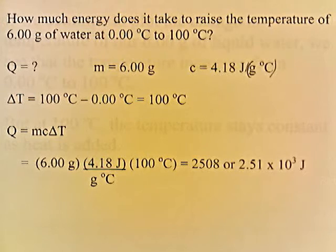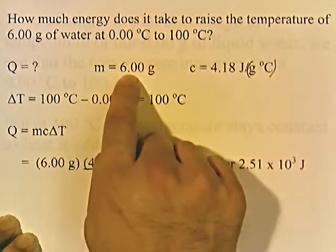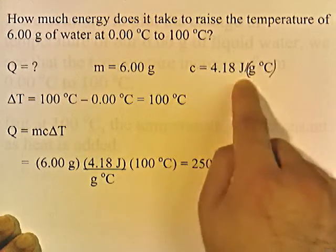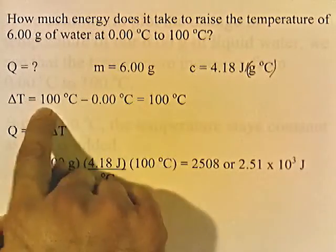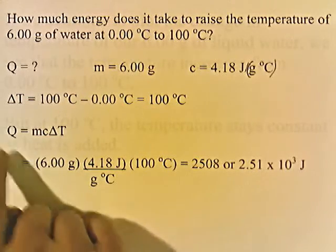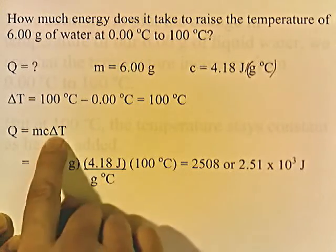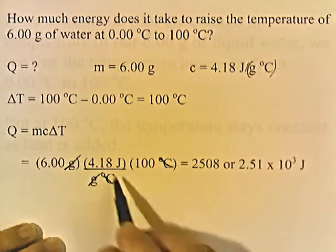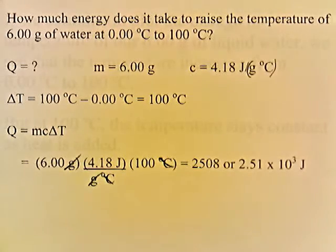How much energy does it take to raise the temperature of 6.00 grams of water at 0 degrees Celsius to 100 degrees Celsius? M is 6 grams, C is 4.18 joules per gram degree Celsius, and delta T is 100 minus 0, which is 100 degrees. Q equals MC delta T: 6 times 4.18 times 100. Grams cancel, degrees Celsius cancels, and you're left with joules. The answer is 2508, or 2.51 times 10 to the third joules.